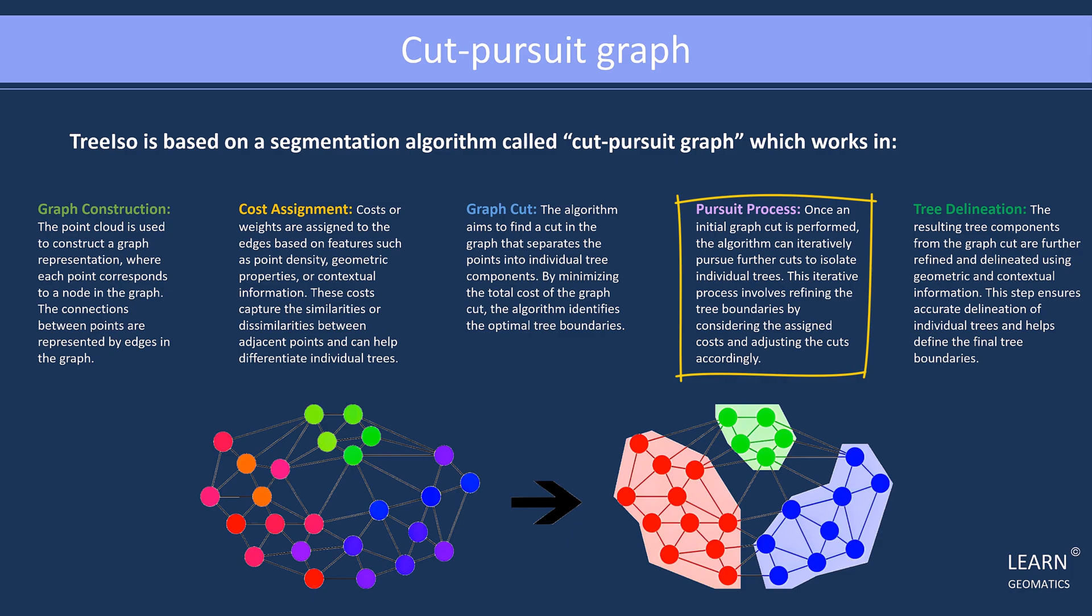The resulting tree components obtained from the graph cut can be further refined and delineated using geometric and contextual information. This step ensures the precise delineation of individual trees, ultimately defining the final tree boundaries.